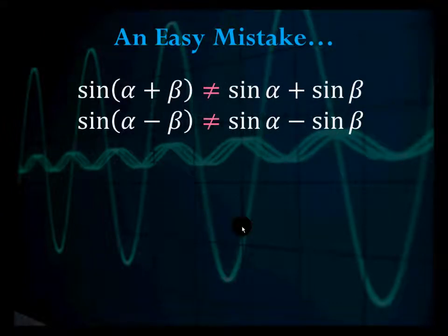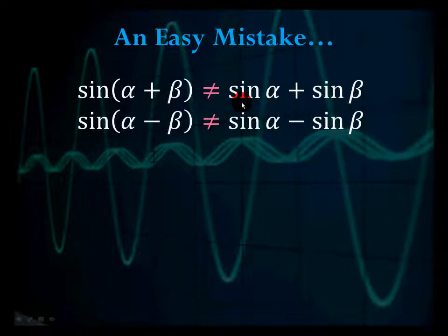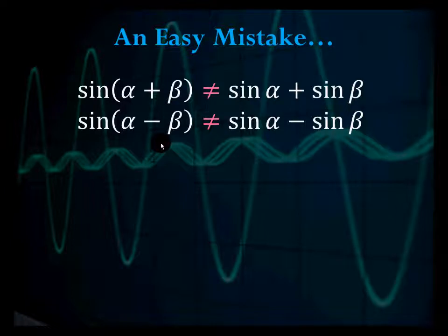An easy mistake, however, is to assume that sine of a plus b equals sine a plus sine b. This is not true. Sine of a plus b is sine a cosine b plus cosine a sine b. Be very careful not to make this mistake — you cannot distribute sine like the distributive property in algebra.